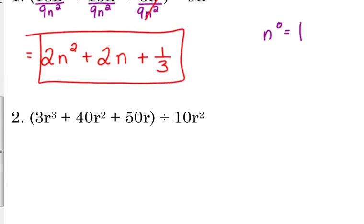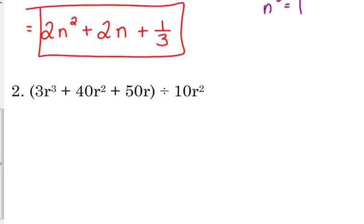Let's look at example number 2. 3r cubed plus 40r squared plus 50r divided by 10r squared. So I go through, write each of these over 10r squared. 3 over 10 doesn't divide evenly, doesn't reduce either. So we're just going to write it as 3 over 10.